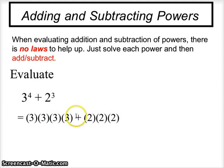Since we are adding, we will figure out these values and add them together. 3 to the power of 4 is 81, 2 to the power of 3 is 8, so we will now add them together to get 89.